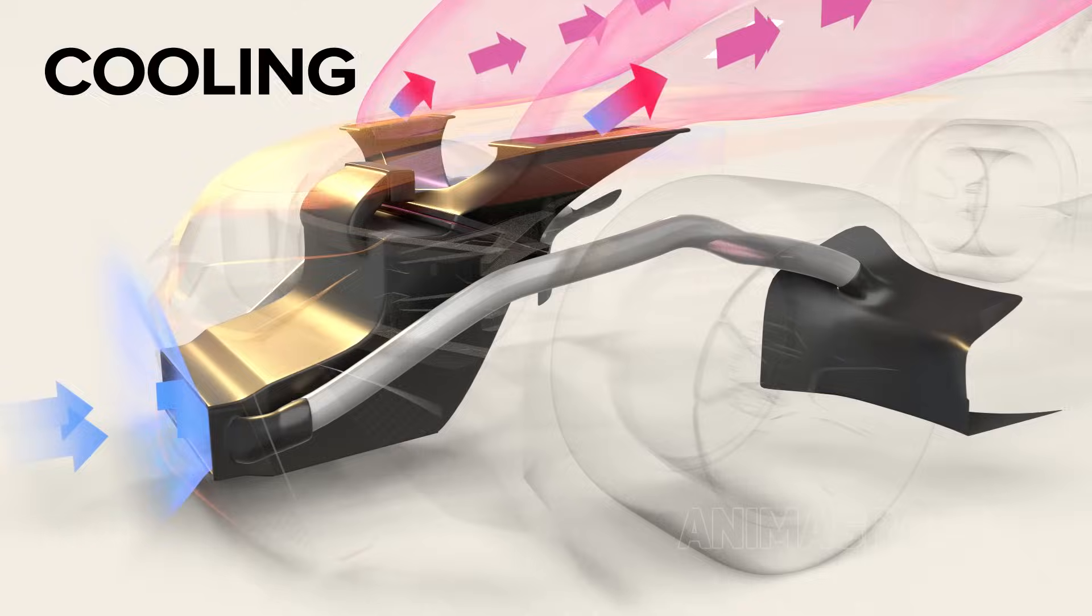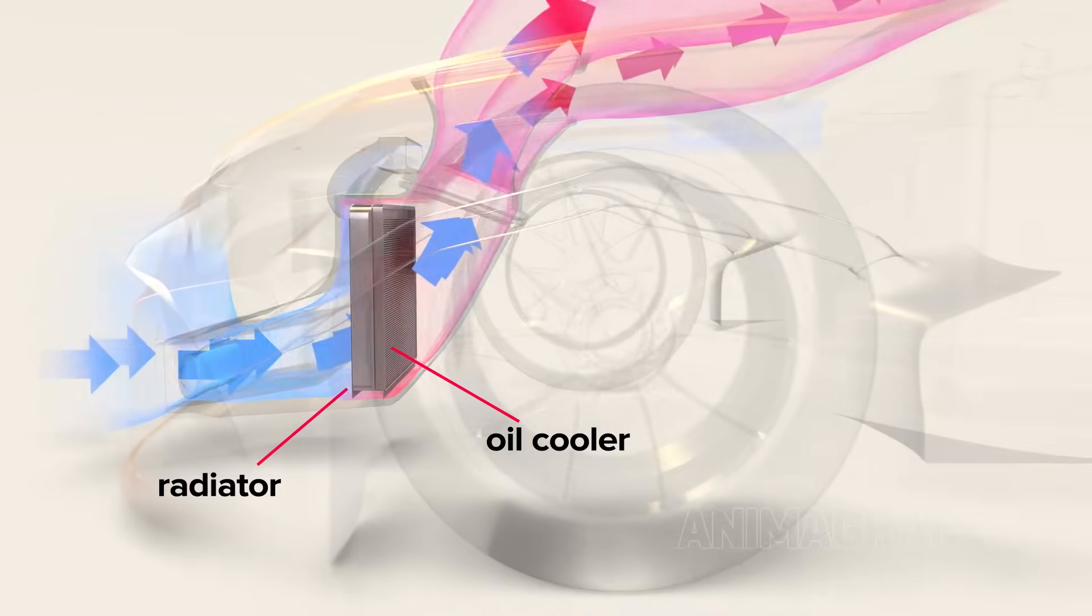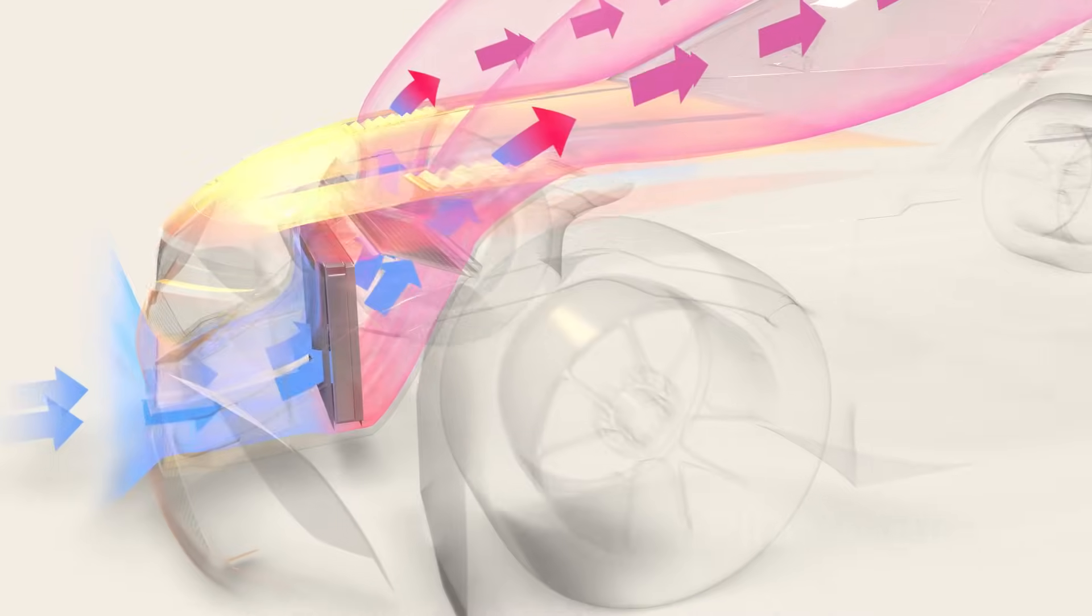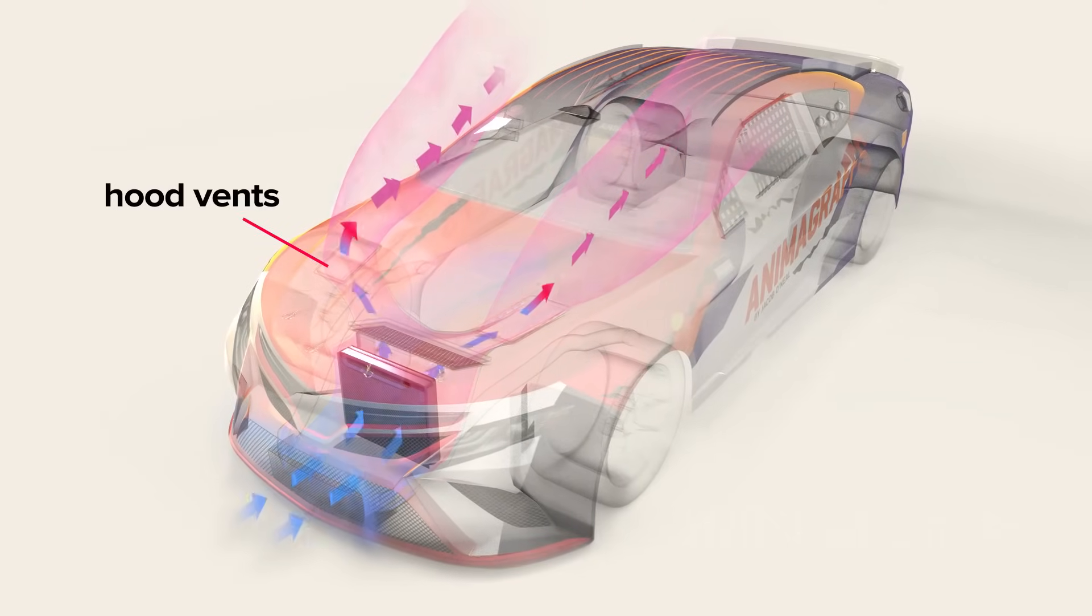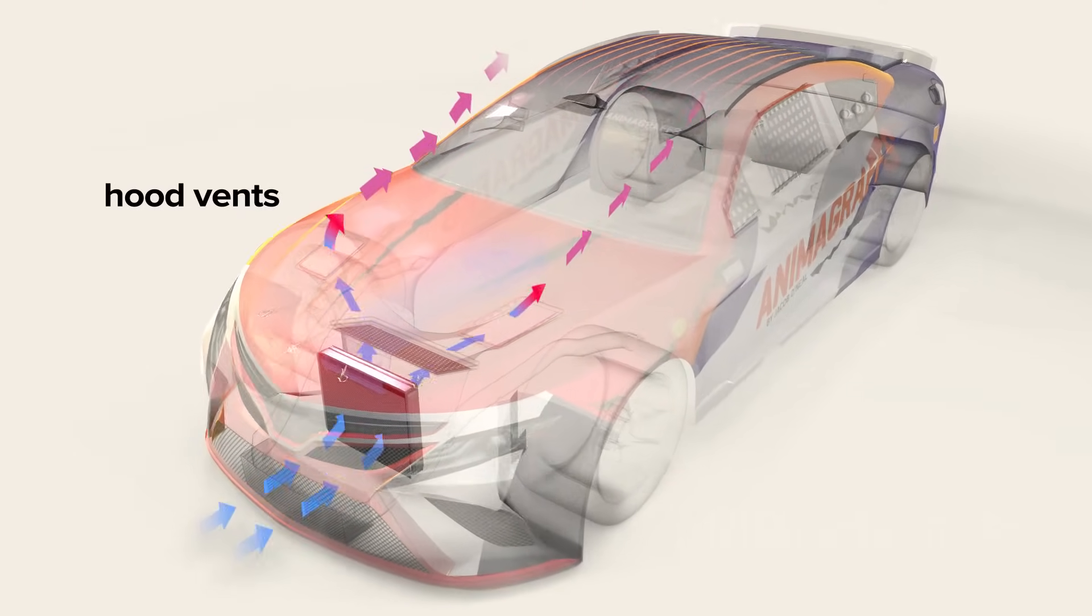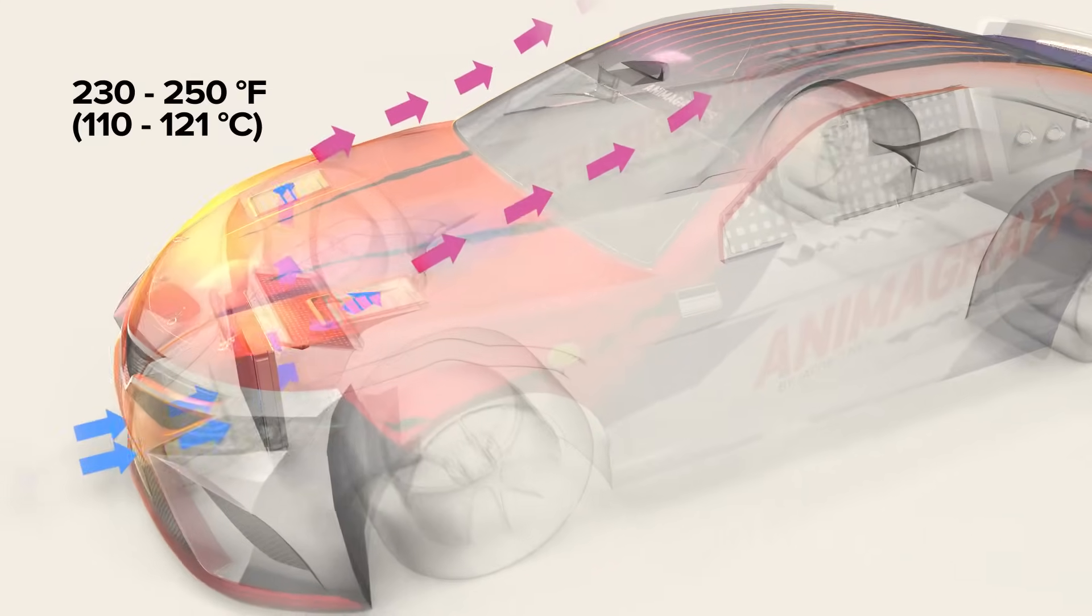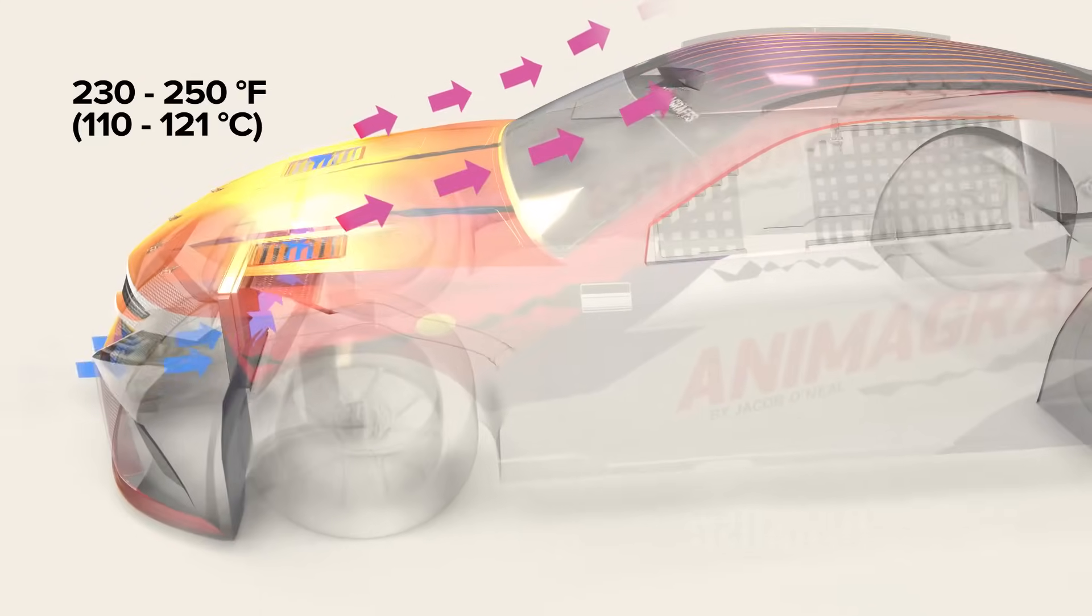The front splitter directs air into the radiator duct where it passes through the radiator and oil cooler. The exiting air stream is directed over the hood and car body through louvered hood vents. The ideal running engine temperature is between 230 and 250 degrees Fahrenheit.